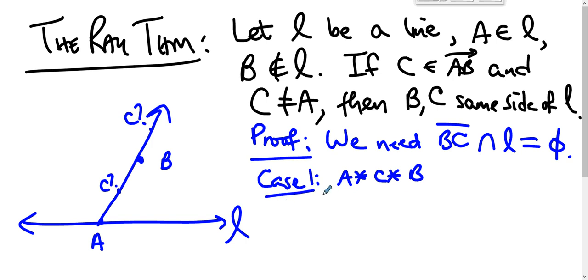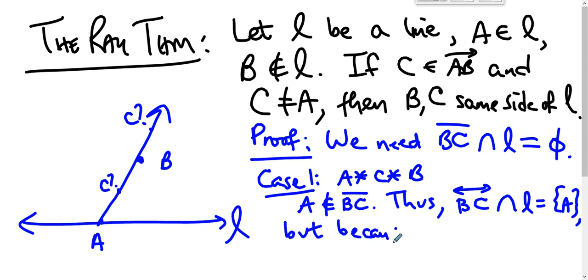What do we know in this case? We know that A is not on segment BC. A is not an element of segment BC because C is between A and B. Thus the intersection of line BC with L is the set containing point A.